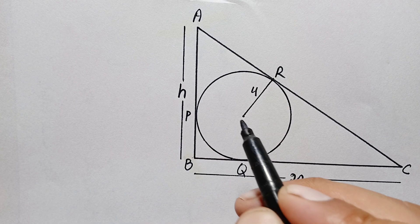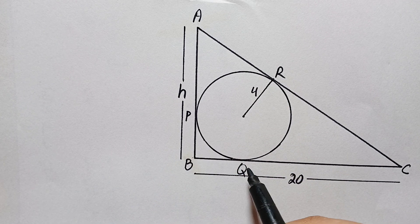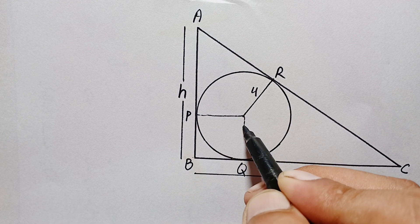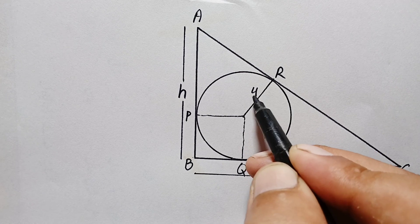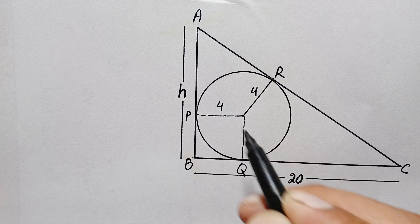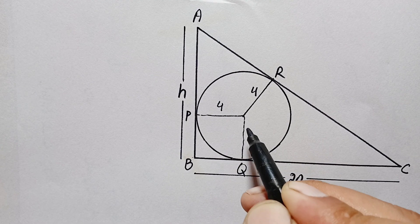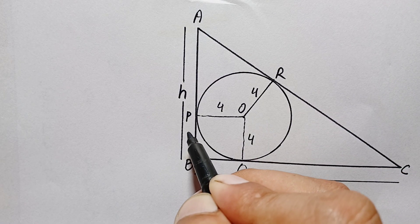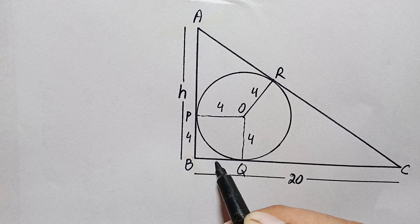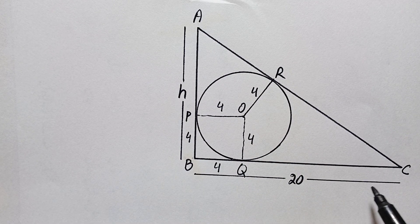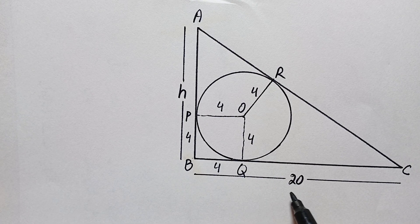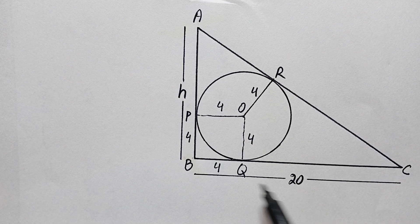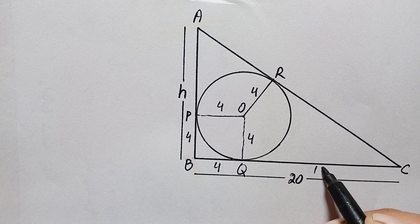Now to find out the value of h, first of all let us connect this center with point P and point Q. This is the radius of this circle, which is 4 units. This will also be 4 units, and this will also be 4 units. Since OQ is perpendicular, PB will also be 4 units, and this will also be 4 units. Now looking at side BC, it has a total length of 20 units, but BQ is 4 units, so the remaining length QC is 20 minus 4, which is 16 units.